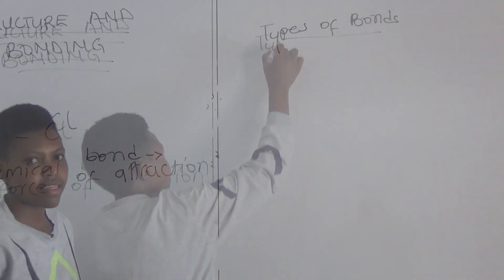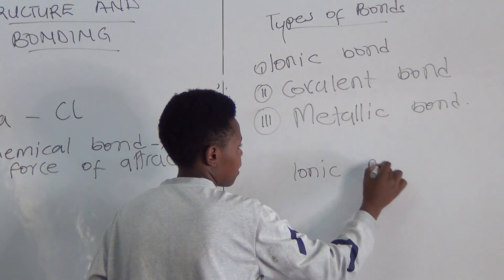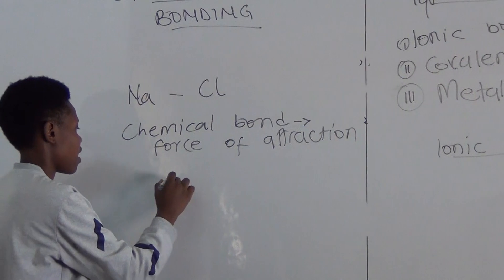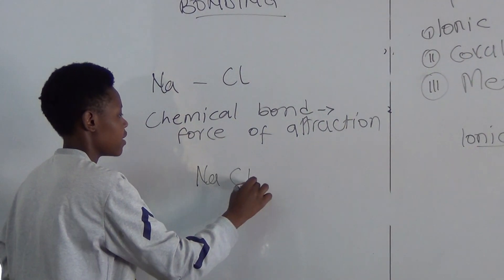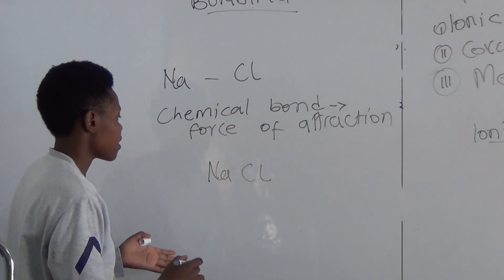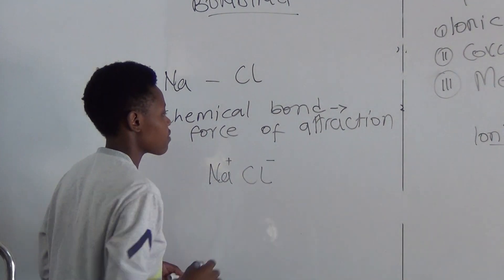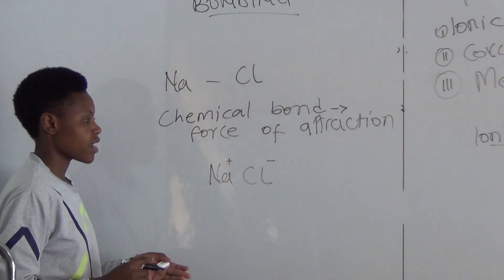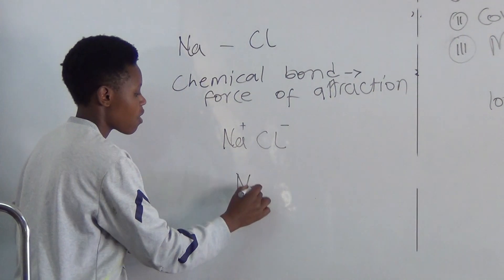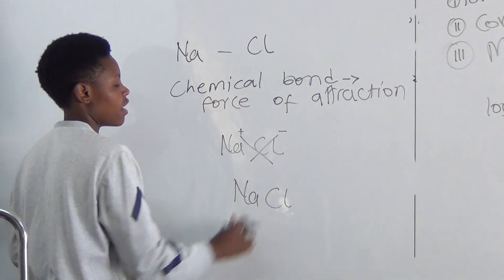There are three types of bonds. The first is ionic bond. Before I talk about ionic bond, when you have sodium chloride, what is the chemical formula? The sodium has a valence electron of one and chlorine has a valence electron of negative one. So when they are forming that reaction — a reaction between sodium and chlorine — they form sodium chloride. That means they have exchanged their valences.